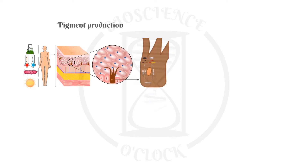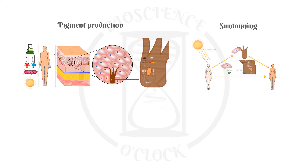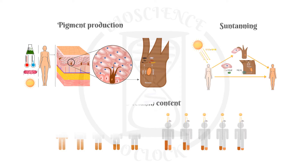Welcome to a one-slide show from Bioscience O'clock. Today we are talking about pigment production, sun tanning, and variations in melanin content among individuals.